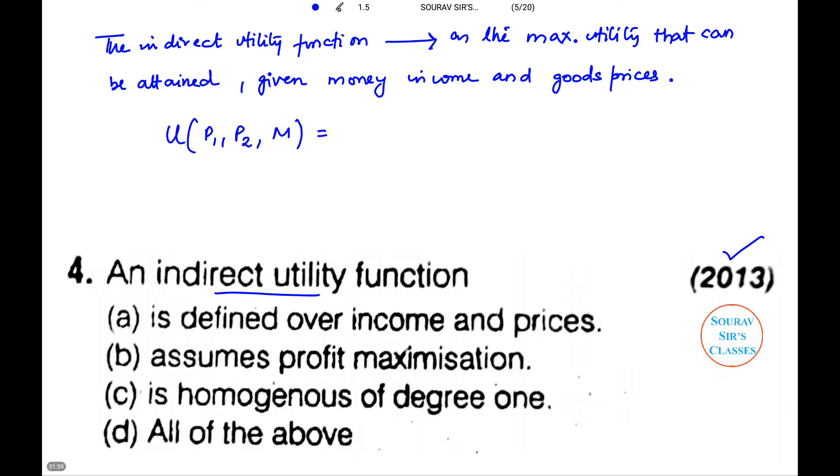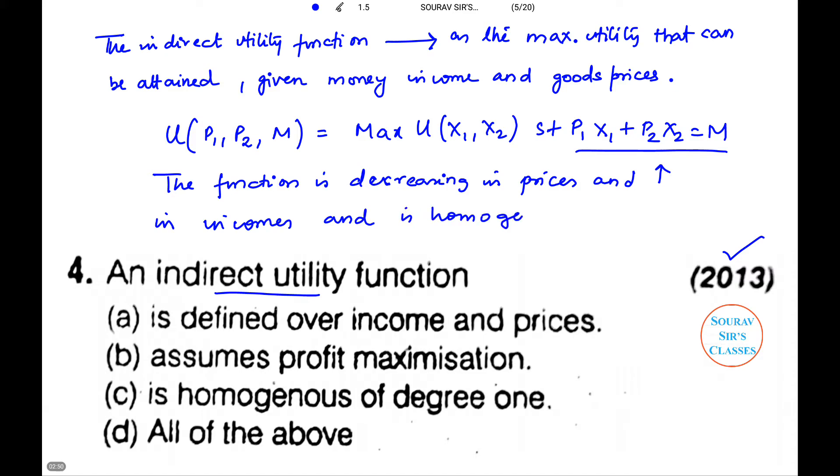It equals maximize U(x1, x2) subject to p1*x1 + p2*x2 = M. This is the budget line equation. The function is decreasing in prices and increasing in income, and is homogeneous of degree 0.